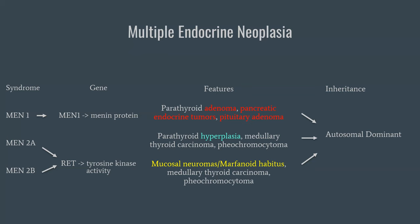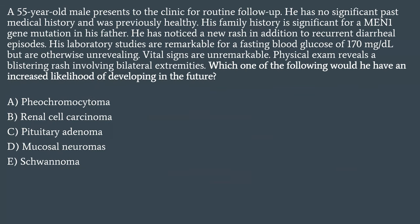Let's do another practice question. A 55-year-old male presents to the clinic for routine follow-up, no significant past medical history and previously healthy. The last sentence is the only thing different here: which of the following would he have an increased likelihood of developing in the future? We know this patient has MEN1. Options: A, pheochromocytoma; B, renal cell carcinoma; C, pituitary adenoma; D, mucosal neuromas; or E, schwannoma.